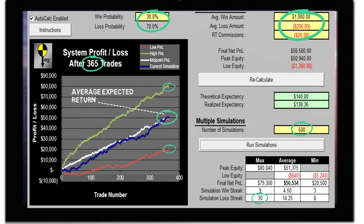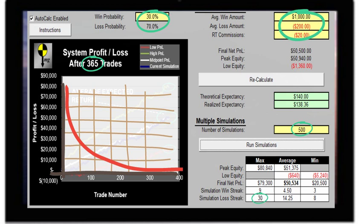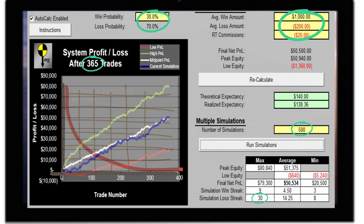The 30 trade losing streak could look something like this. If the risk is managed correctly in the bigger picture, it is just a blip.